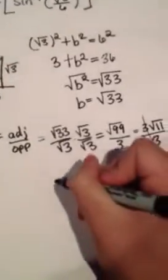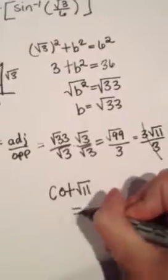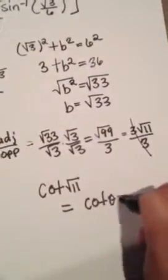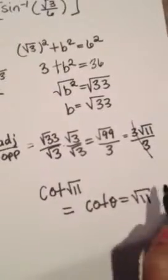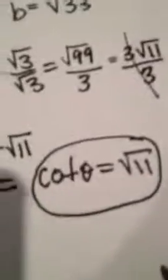So cotangent of square root of 11 equals cotangent theta equals square root of 11. And this is the answer for cotangent square root of 11.